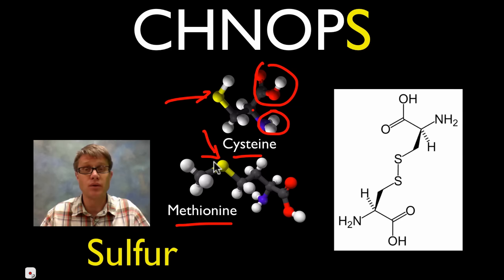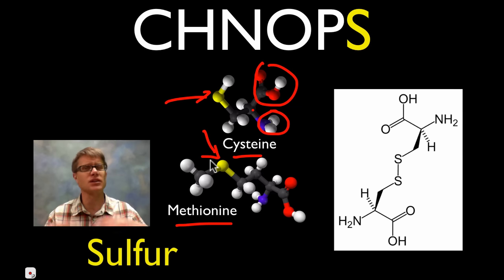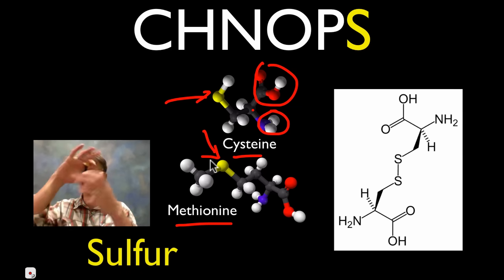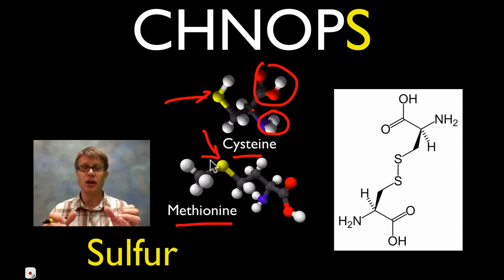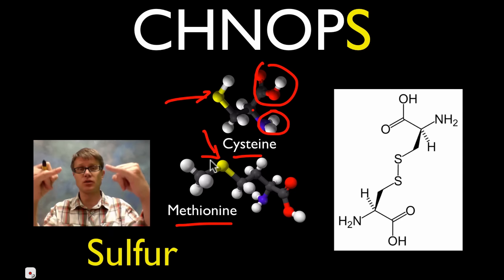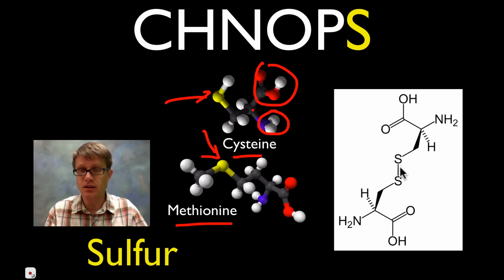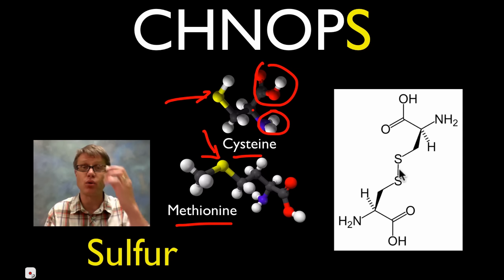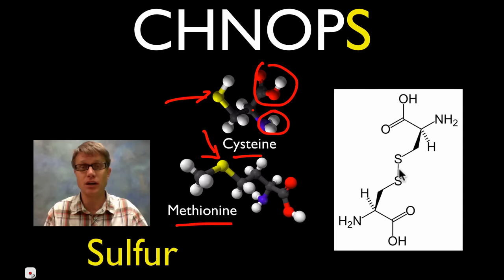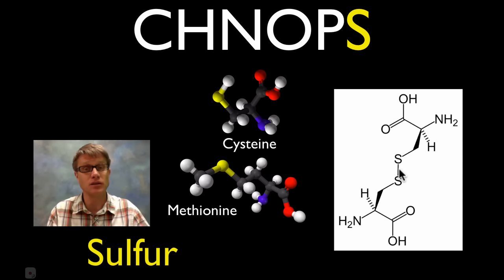And why is sulfur important? Well remember proteins make us the way we are and they have this complex three dimensional shape. Basically if you have a sulfur and a sulfur in two R groups they'll be held together with a bond — this is called a disulfide bridge or a disulfide bond. And so sulfur is important because it gives us structure to those big proteins.